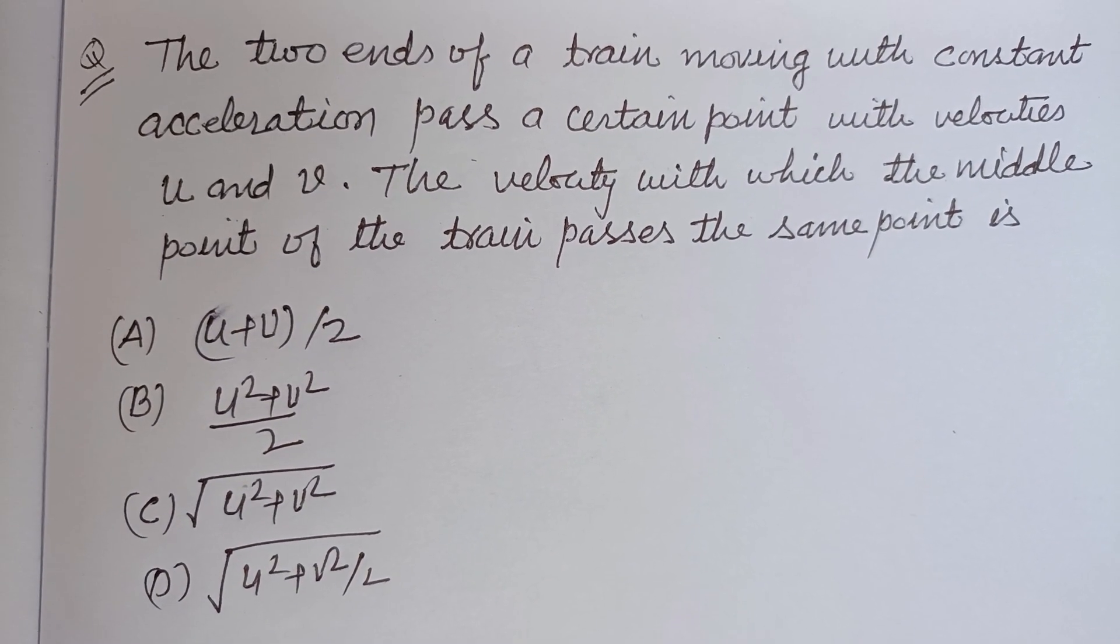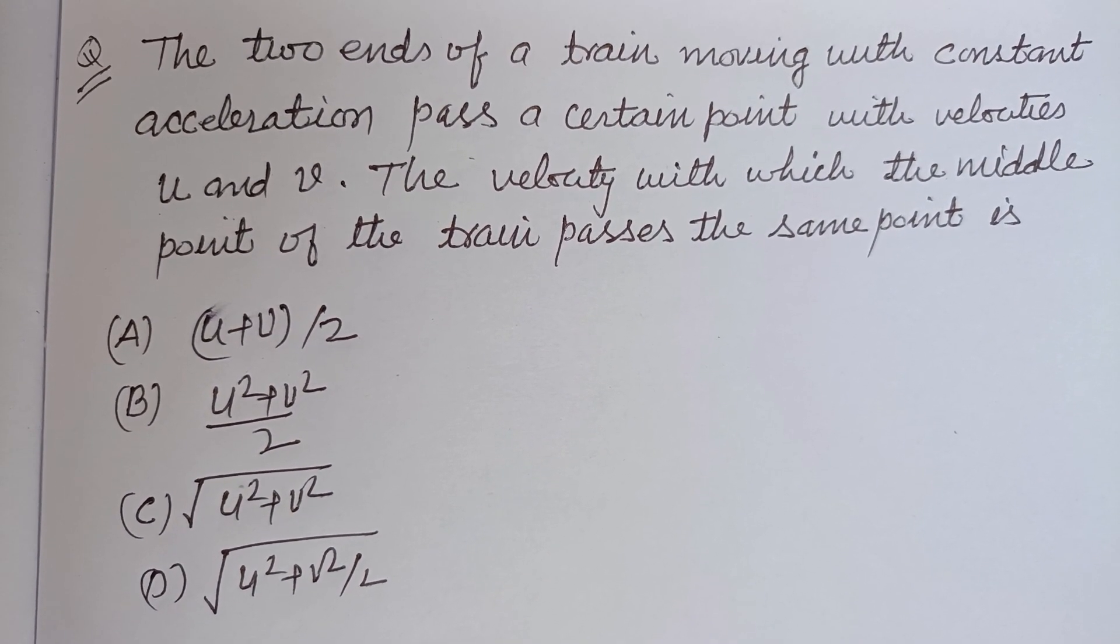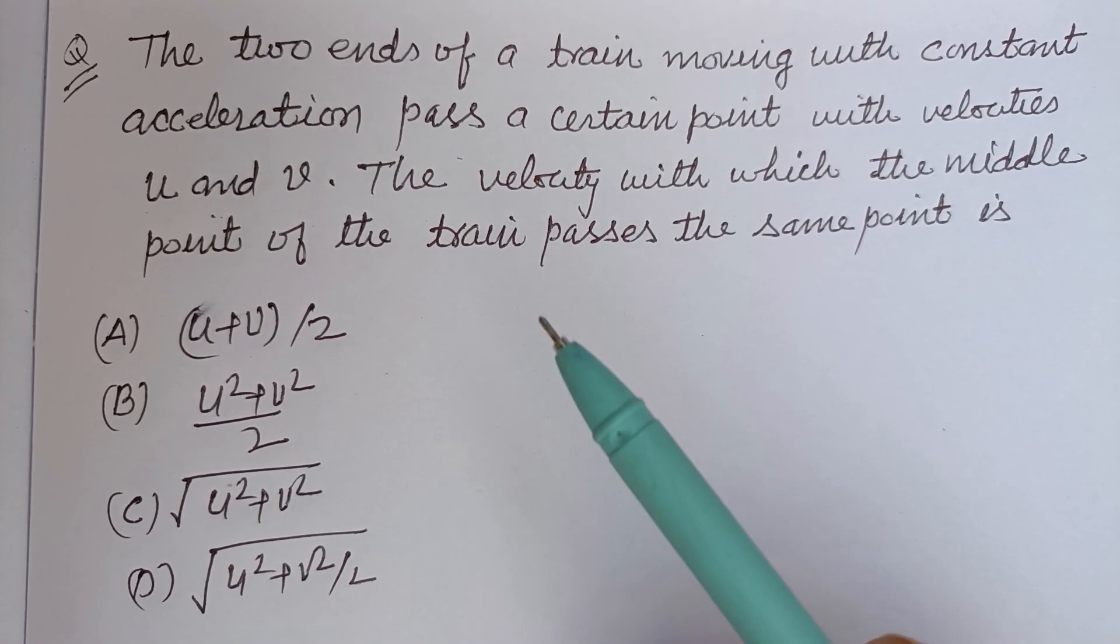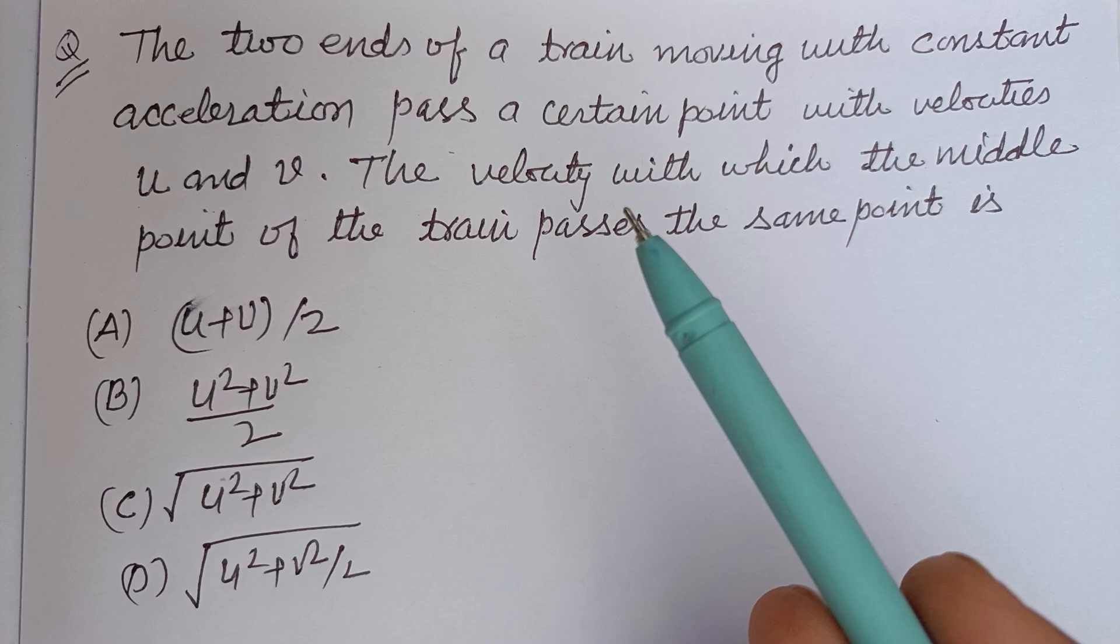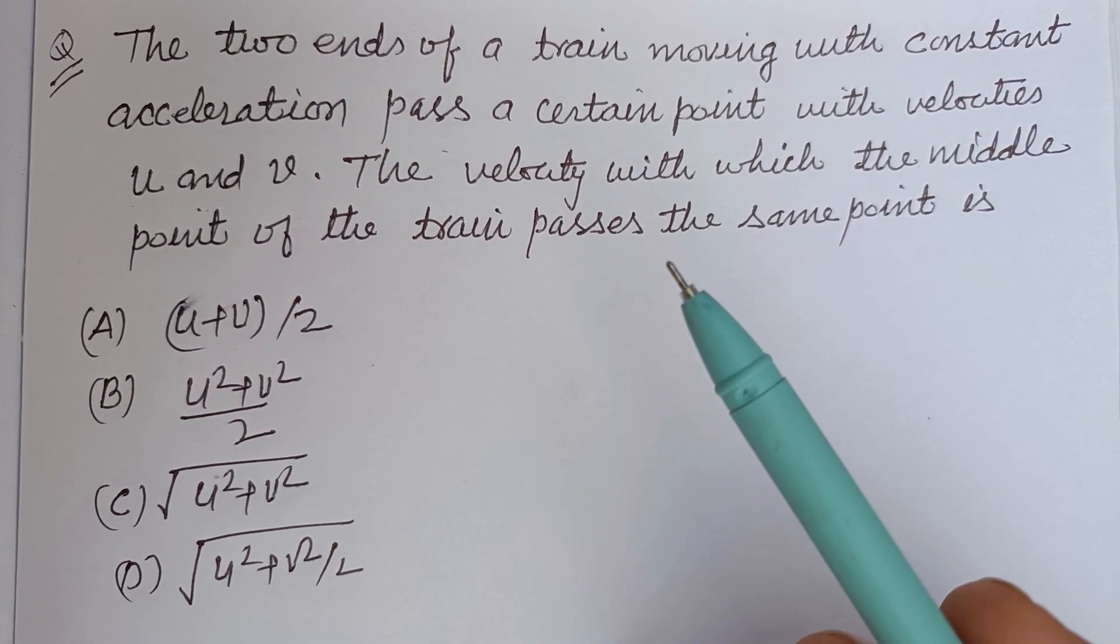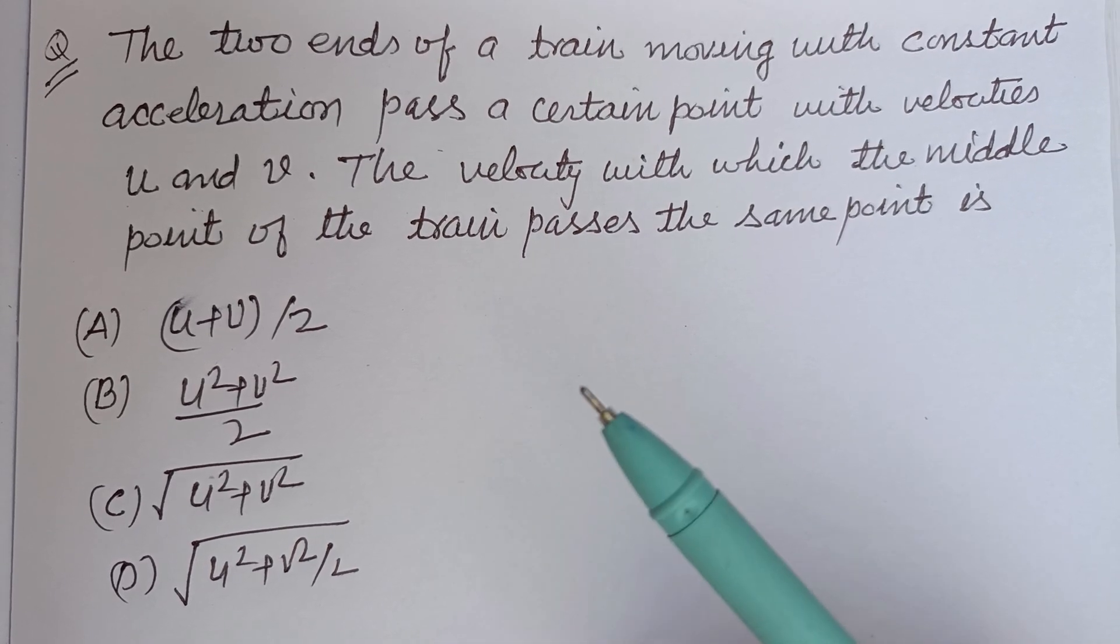Hello viewers, warm welcome to this YouTube channel. Question is: The two ends of a train moving with constant acceleration pass a certain point with velocity u and v. The velocity with which the middle point of the train passes the same point is?